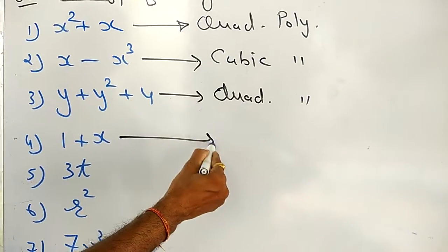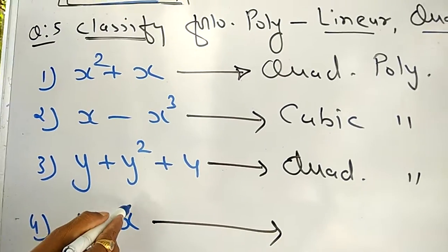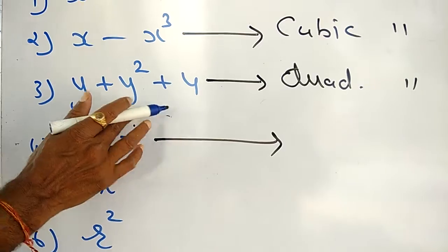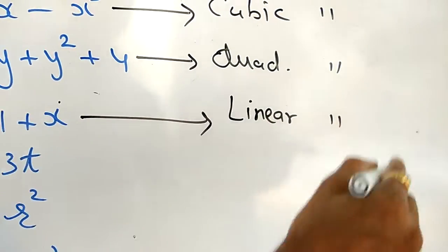Fourth one: 1 + x. Here, the maximum power exponent is 1. x has maximum degree 1. Therefore, this is called as linear polynomial.